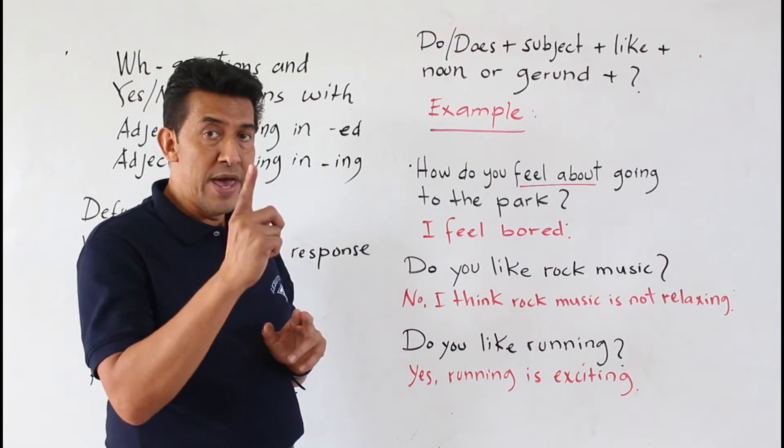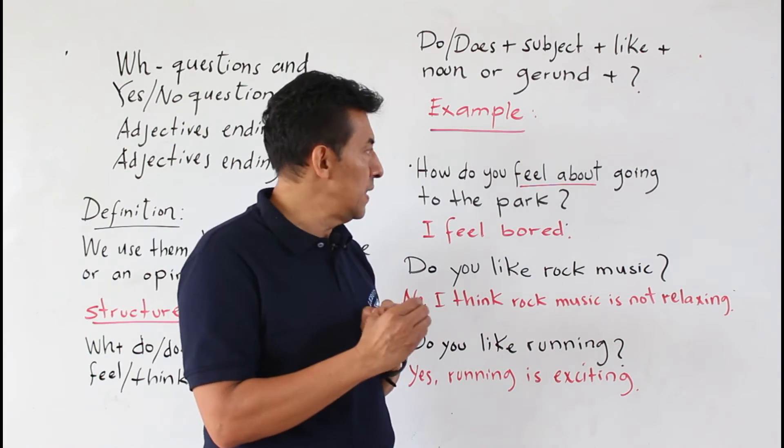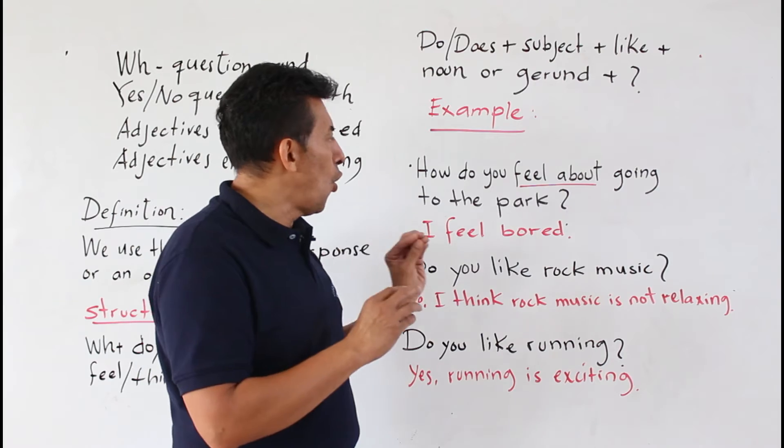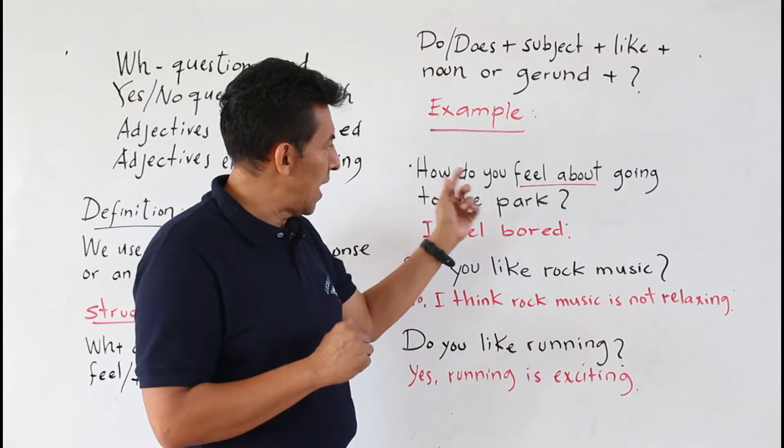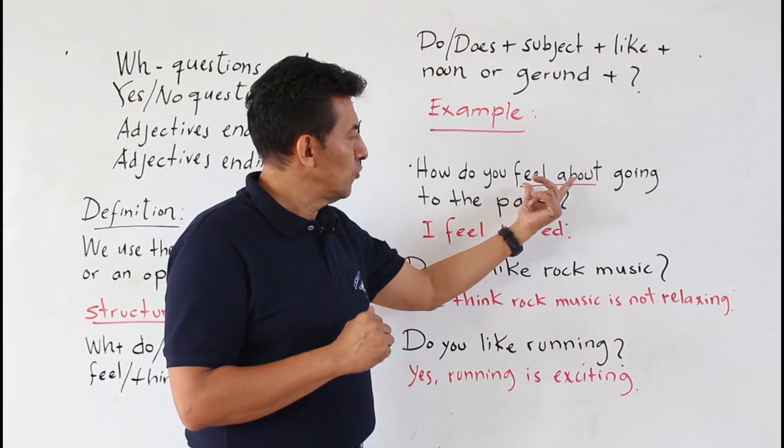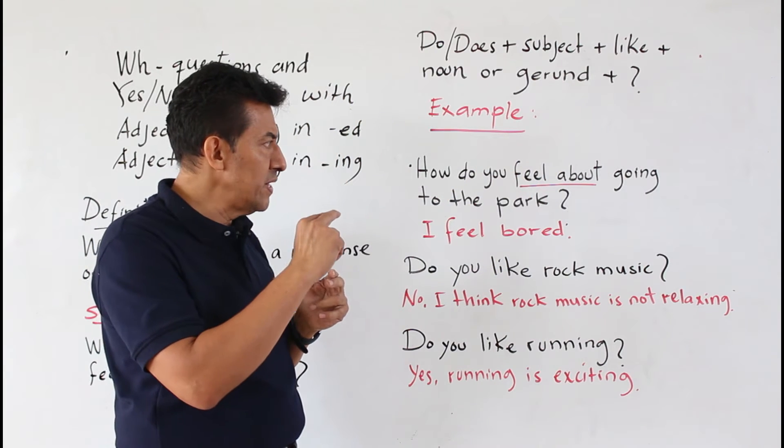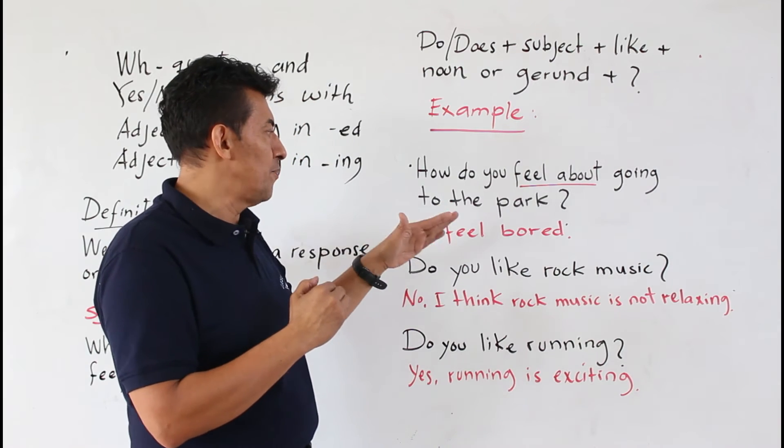Vamos a ver primero la WH-question. Pregunta, hey, how do you feel about going to the park? Noten, es la estructura, how do you, y aquí tenemos, recuerden que tenemos el adjetivo feel about. How do you feel about going to the park?